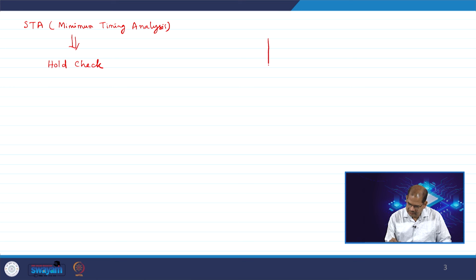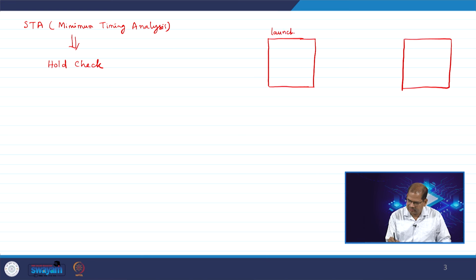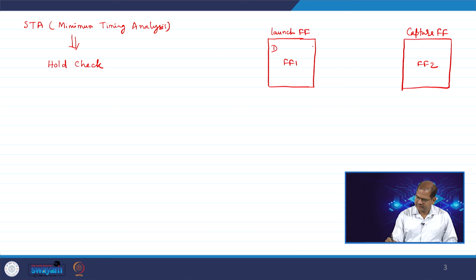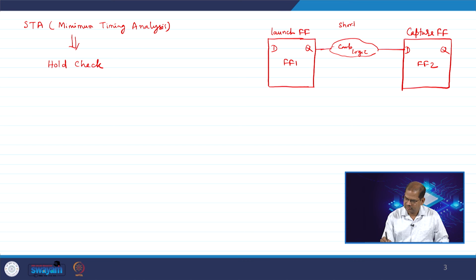We will derive the equation for the hold path. This is the launch flip-flop (flip-flop 1) and this is the capture flip-flop (flip-flop 2), with D and Q pins labeled. There is some combinational logic between them. Since we are doing minimum path timing analysis, we need to find the short path or minimum path in the combinational logic.